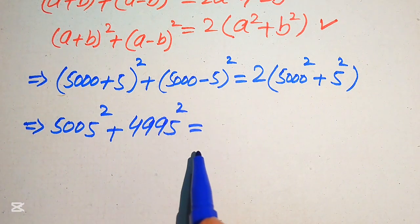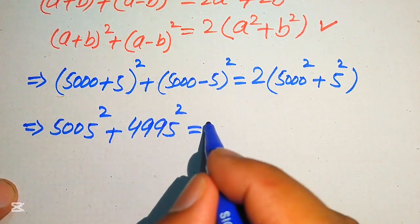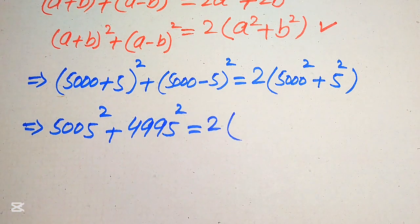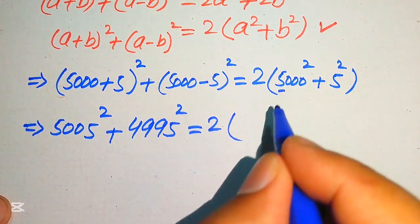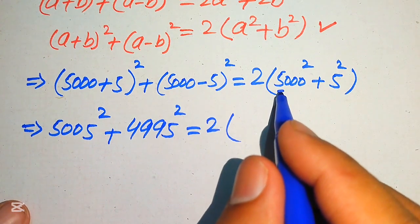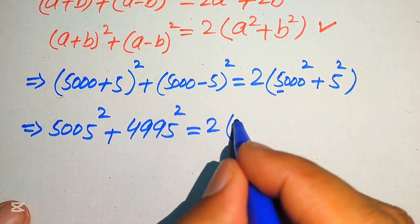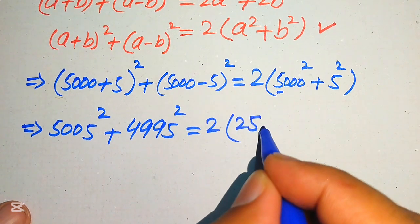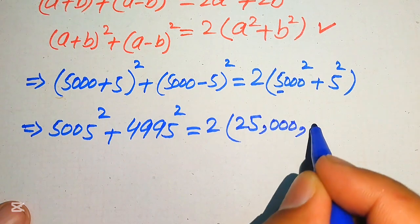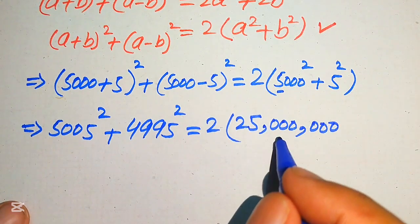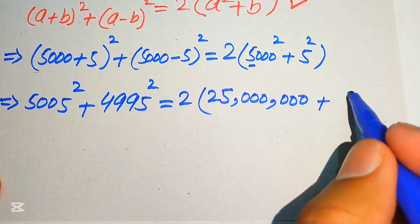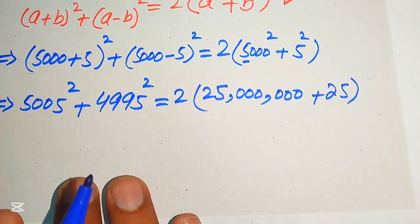Now we move forward to the solution. We need to find the square of 5000. The square of 5 is 25, and squaring the three zeros gives six zeros, so 5000² = 25,000,000. And 5² = 25.